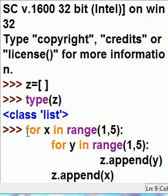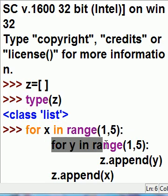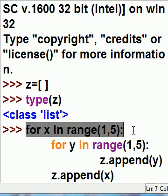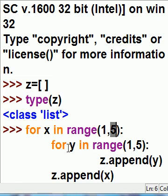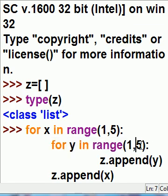Now I key in two for loops. The outer loop is for X in range 1 through 5. That means 1, 2, 3, and 4. It'll go up to but not include 5. The inner loop will be for Y in range 1 through 5, and that means 1, 2, 3, and 4. It doesn't include the last item.